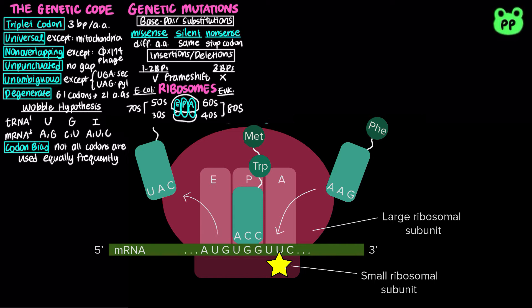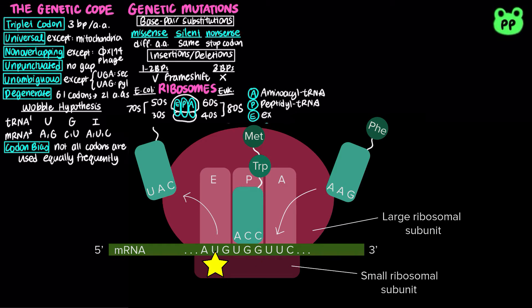The A site stands for aminoacyl tRNA binding site, which holds the tRNA carrying the next amino acid to be added to the chain. The P site stands for peptidyl tRNA binding site, which holds the tRNA carrying the growing polypeptide chain. The E site stands for exit site, where discharged tRNAs leave the ribosome.